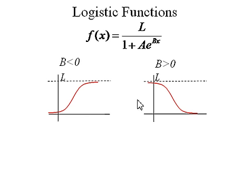There are parameters that can be changed depending on what we need the graph to do. If B is less than 0, we get the increasing logistic curve. If B is greater than 0, we get the decreasing logistic curve.